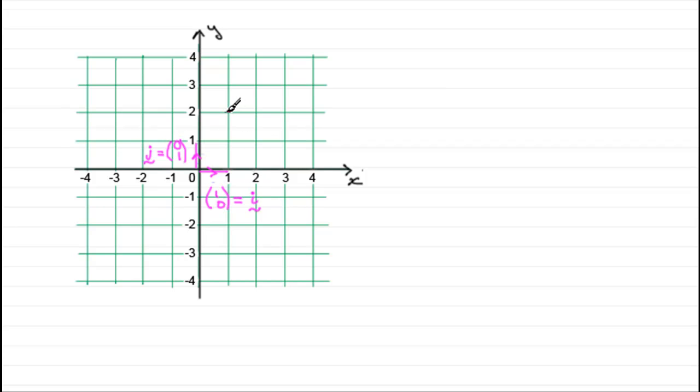Now any vector that we like can be represented in terms of i's and j's. If I took a vector like this one here, let's call it the vector A, it would be 1, 2, 3 in the i direction and 1 unit in the j direction.